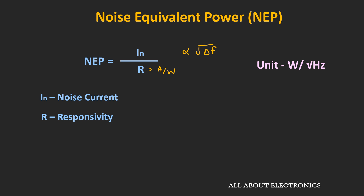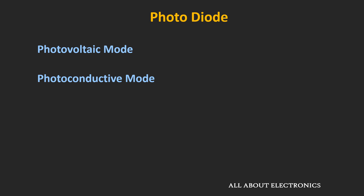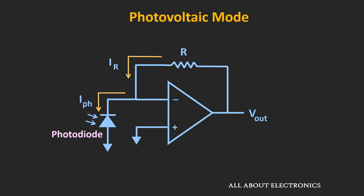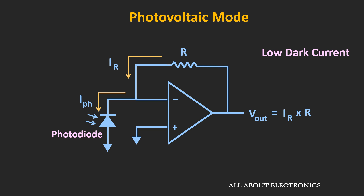The photodiode can be operated in two modes. The first is the photovoltaic mode, where no biasing is applied and the photocurrent varies linearly with incident light. An op-amp configured as a transimpedance amplifier converts the generated photocurrent into a voltage. The virtual ground of the op-amp ensures the photodiode remains at zero biasing voltage — if a resistor were directly connected, the biasing voltage would change with photocurrent. In photovoltaic mode, the dark current is minimum, making it suitable for low noise applications.